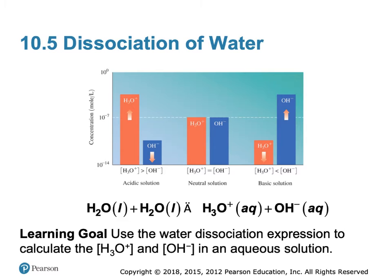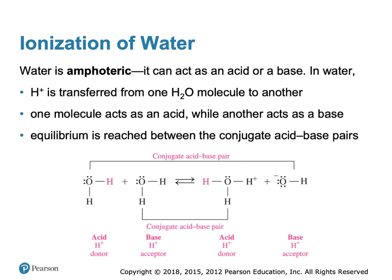Now we're going to continue with equilibrium but look at the dissociation of water. Liquid water can dissociate into ions — H₃O⁺ and OH⁻, the hydronium ion and the hydroxide ion. Water is known as an amphoteric substance, meaning it can act as an acid or a base. In water, H⁺ is transferred from one molecule of water to another — one molecule acts as a Bronsted acid while the other acts as a Bronsted base. Equilibrium is reached between the conjugate acid-base pairs, giving a balance between hydronium and hydroxide ions.